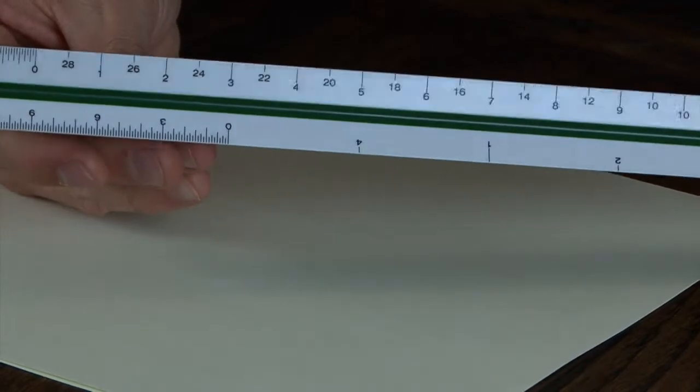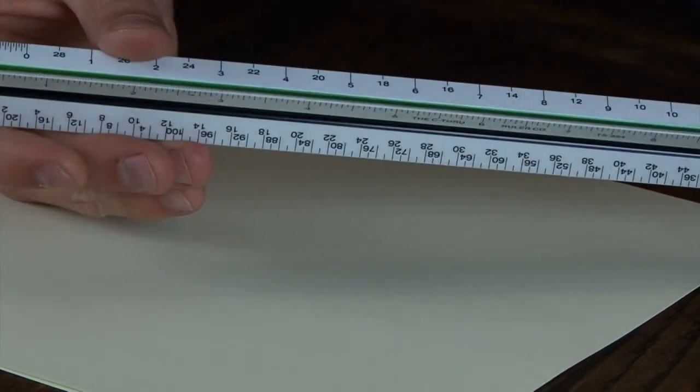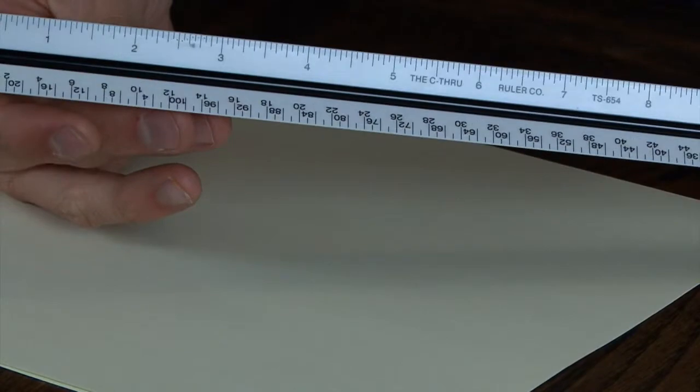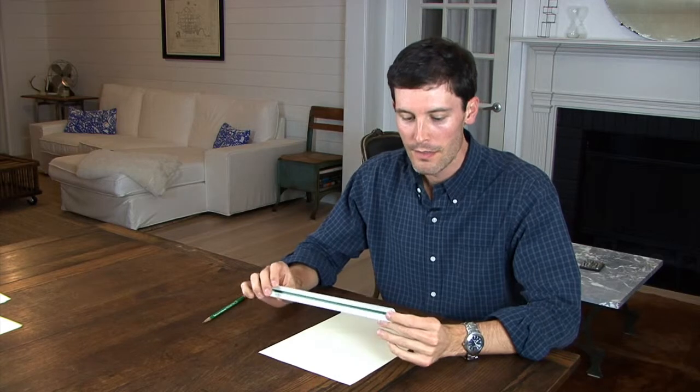For what we're going to do today, we're going to use a quarter inch scale. What that means is that a quarter of an inch equals a foot. So if you're using a half inch scale, a half inch equals a foot; an eighth inch scale, an eighth inch equals a foot, so on and so forth. You get the idea.